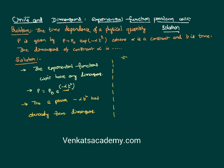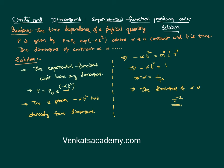That implies minus alpha t squared has dimensions of M⁰ L⁰ T⁰ — dimensions are nothing but the powers of the fundamental quantities, all equal to zero. That implies minus alpha times t squared equals one dimensionally, so minus alpha has dimensions of 1 by t squared. The sign does not matter for dimensions, so the dimensions of alpha is simply 1 by t squared, or T to the power of minus 2.